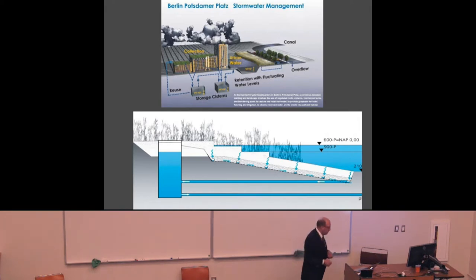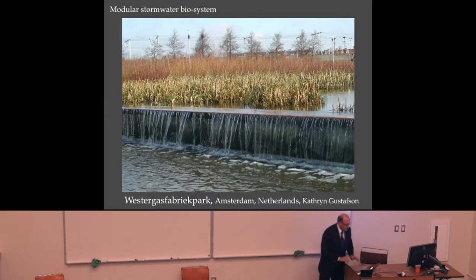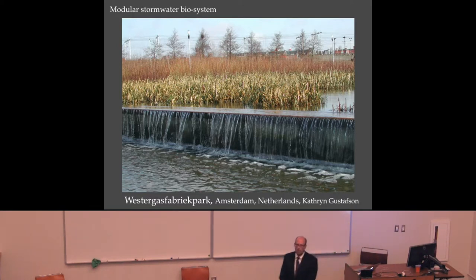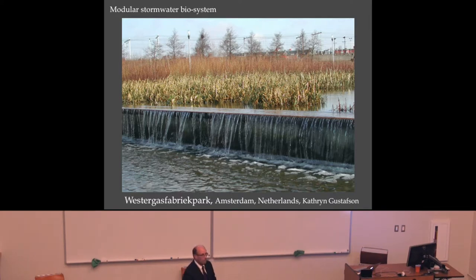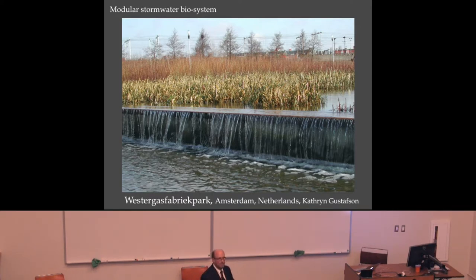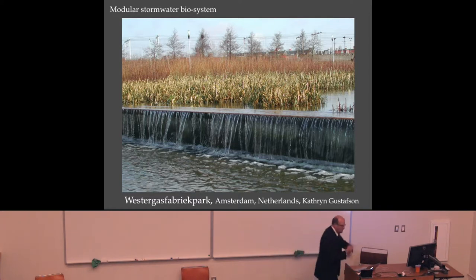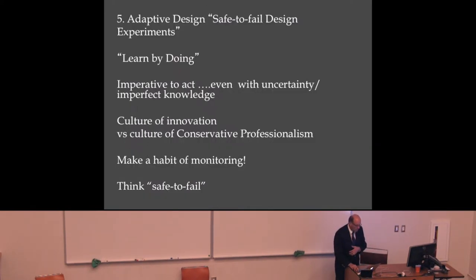Another example is a relatively new park in Amsterdam — about eight to ten years old — a brownfield park, a newer version of Gasworks Park in Seattle from the 1970s by Richard Haag. A marsh and weir system is part of the stormwater remediation and circulation system: water moves by gravity to the bottom, is pumped back to the top, and recirculated. It's separated from the contaminated soil below — again, a self-contained modular system that is safe to fail and won't spread disturbance to other areas.